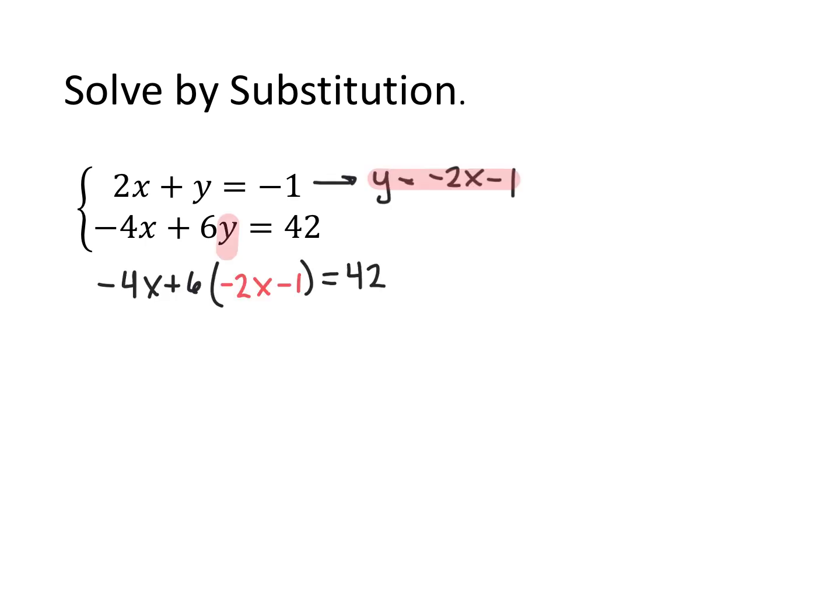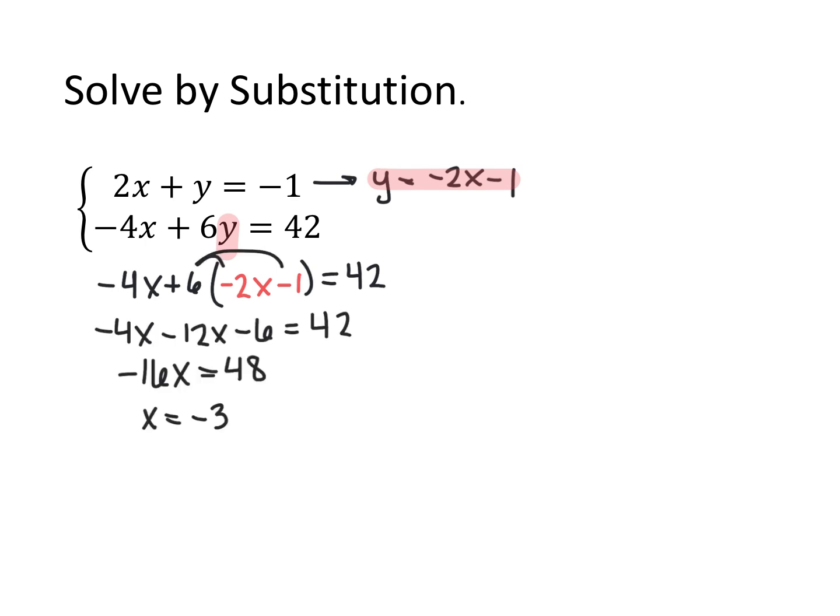For this first one, the first equation has a y that doesn't have a coefficient, so I solved that equation for y and got y equals negative 2x minus 1. Then I substitute that in for y in the second equation, so I get negative 4x plus 6 times the quantity negative 2x minus 1 equals 42. Now I solve for x by distributing in the 6, and I got x to be negative 3.